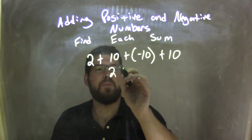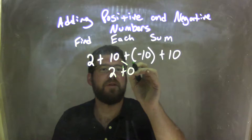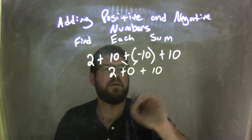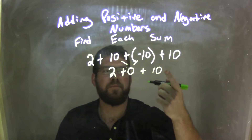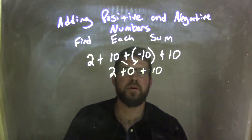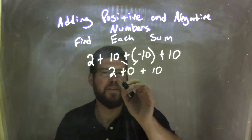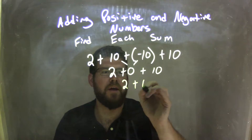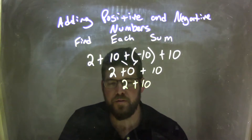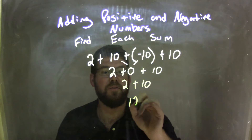So now we have 2 plus 0 — which is where the 10 and the negative 10 came together — plus the remaining 10 out to the right. So now we have 2 plus 0 plus 10. I don't really need the 0, so I have 2 plus 10 left. Now it becomes very simple: 2 plus 10 is 12. And there's my final answer.